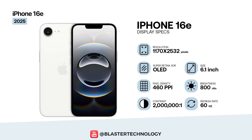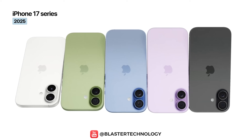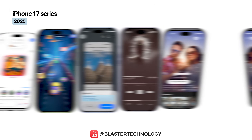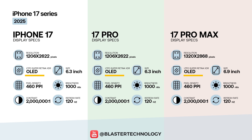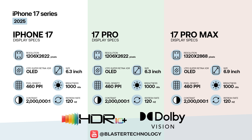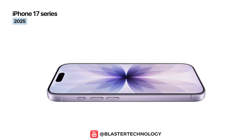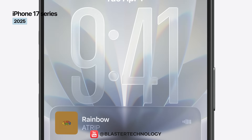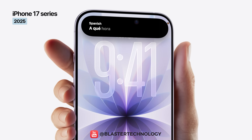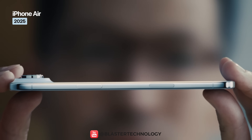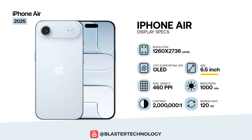The iPhone 16e keeps most of the characteristics of the iPhone 16 display, but offers lower brightness. The iPhone 17 series delivers some of the most advanced displays yet, with every model using LTPO Super Retina XDR OLED panels with adaptive 120 Hz refresh rate, HDR10 and Dolby Vision support, 1000 nits typical brightness, 1600 nits HBM, and up to 3000 nits peak. The entire series uses Ceramic Shield 2 and a new anti-reflective coating, with the major differences being screen size and resolution. The same specifications apply to the iPhone Air, which uses a 6.5-inch display with a resolution of 1260 x 2736 pixels.